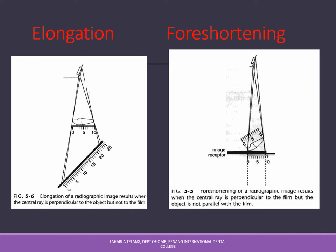Regarding size and shape distortion, two key terms are elongation and foreshortening. Elongation of a radiographic image results when the central ray is perpendicular to the object but not the film — the x-rays are at 90 degrees to the tooth but the film is not at 90 degrees to the tooth, producing an elongated image. Foreshortening results when the central ray is perpendicular to the film but the object is not parallel with the film — the x-rays are at 90 degrees to the film but the object and film are not parallel to each other.